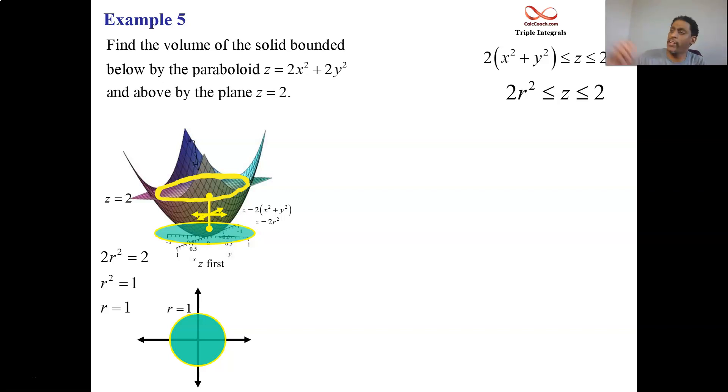You come radially out from the origin, and you have all of theta, zero to 2π. So r goes from zero to one, and then theta goes from zero to 2π. You're on your way. You have your bounds for your cylindrical triple integral.